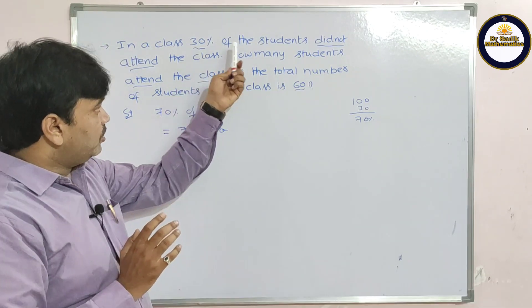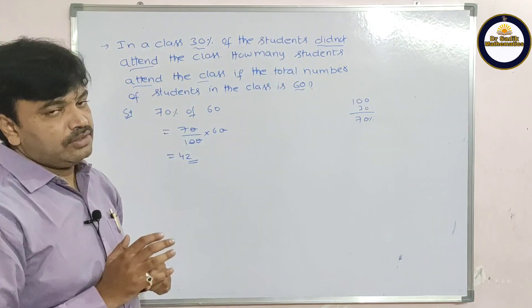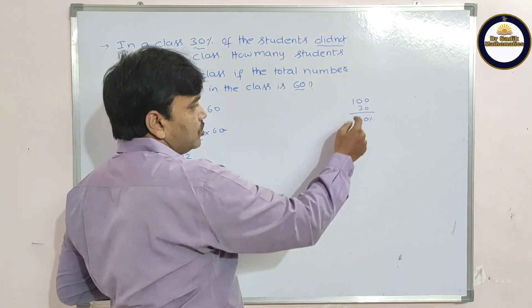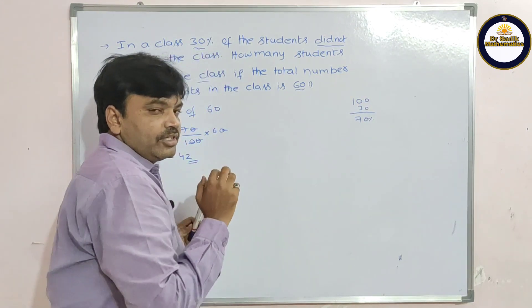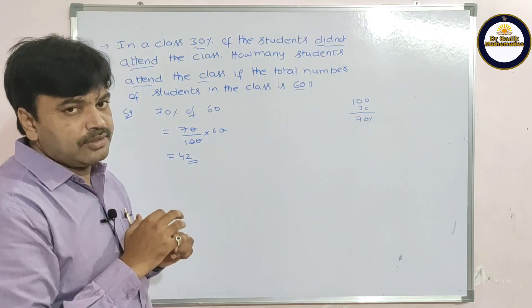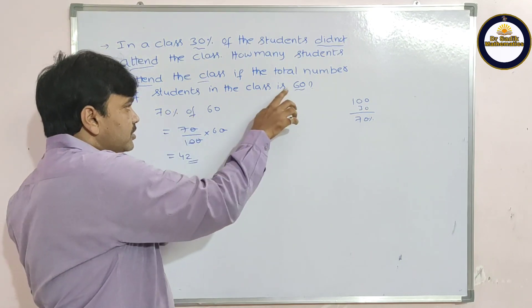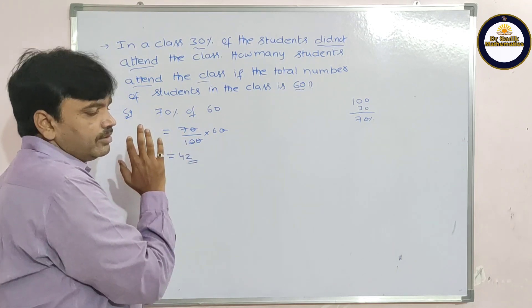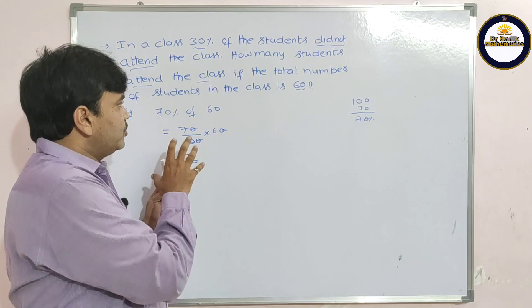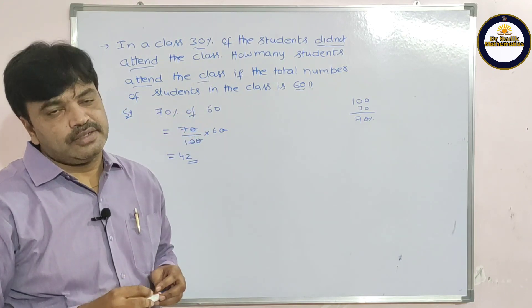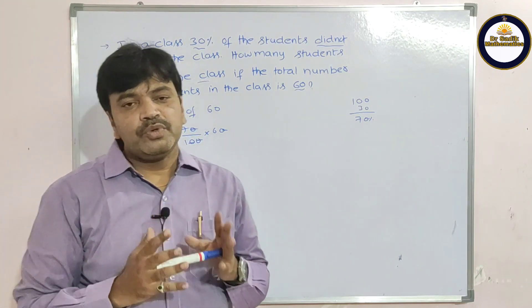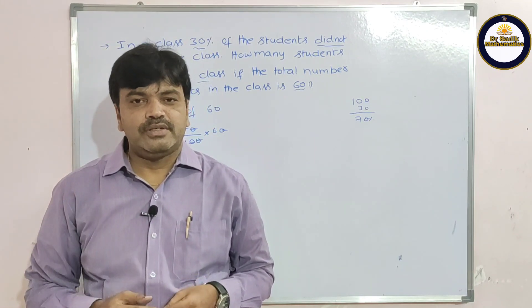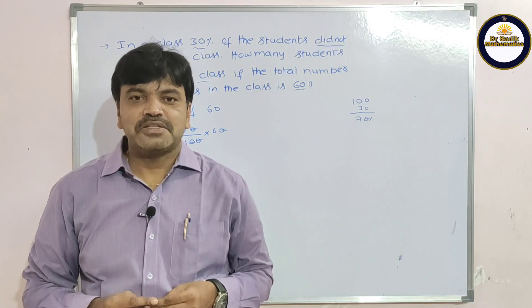30% did not attend the class. Finding the percentage who attended: 100 minus 30 gives 70%. So 70% of 60 equals 70 by 100 into 60, which gives 42. So 42 is the number of students who attended the class. Hope you understand. If you have any doubt, please comment in the comment box. Thank you for watching this video.